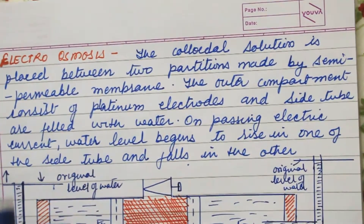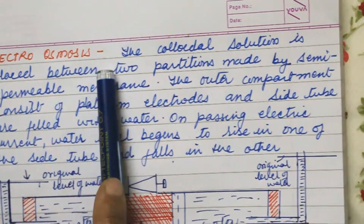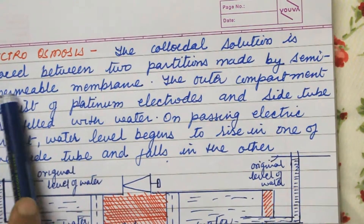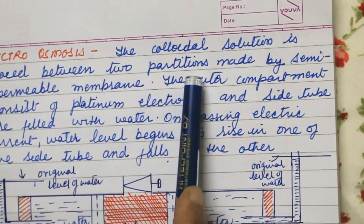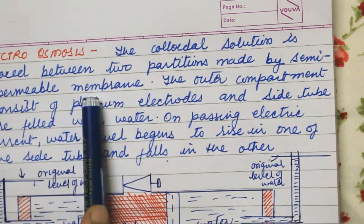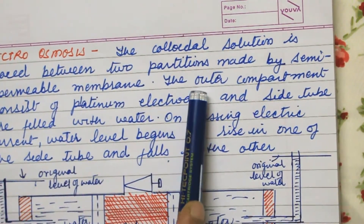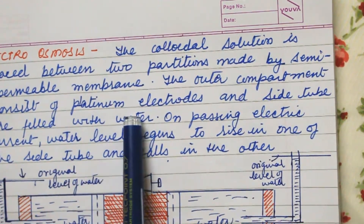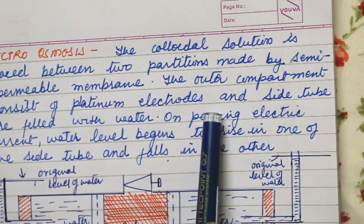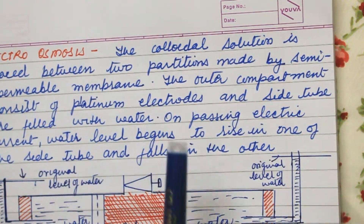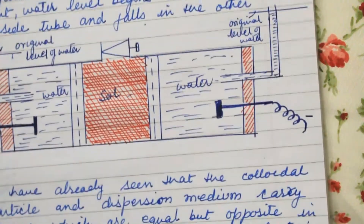Next is electroosmosis. The colloidal solution is placed between two partitions made by a semi-permeable membrane. The outer compartment consists of platinum electrodes and side tubes filled with water.